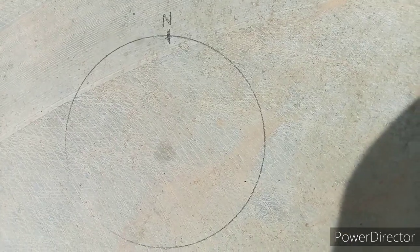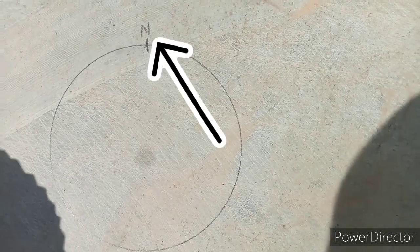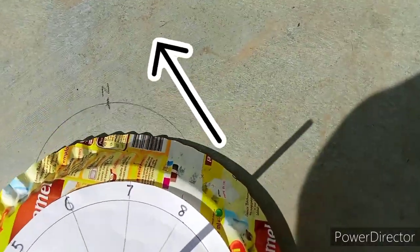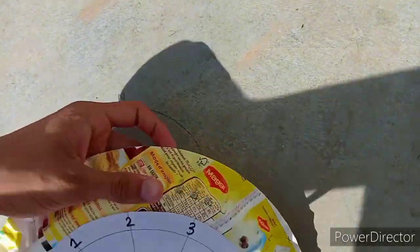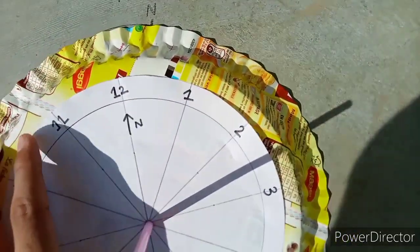As you all can see that I have already marked the north direction with the help of compass. So now I am going to keep this sundial and we have to make sure that this 12 should be at north.